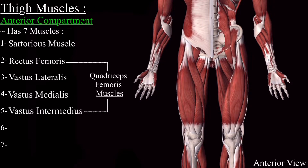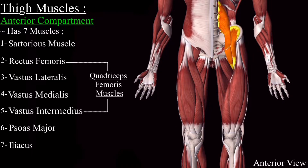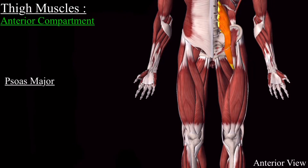The other two muscles included in the anterior compartment of the thigh are the psoas major muscle and the iliacus muscle. These muscles originate from the posterior abdominal wall, and after origination, the terminal end of these muscles enters into the anterior compartment of the thigh. That's why these muscles are included in the anterior compartment of the thigh muscles.